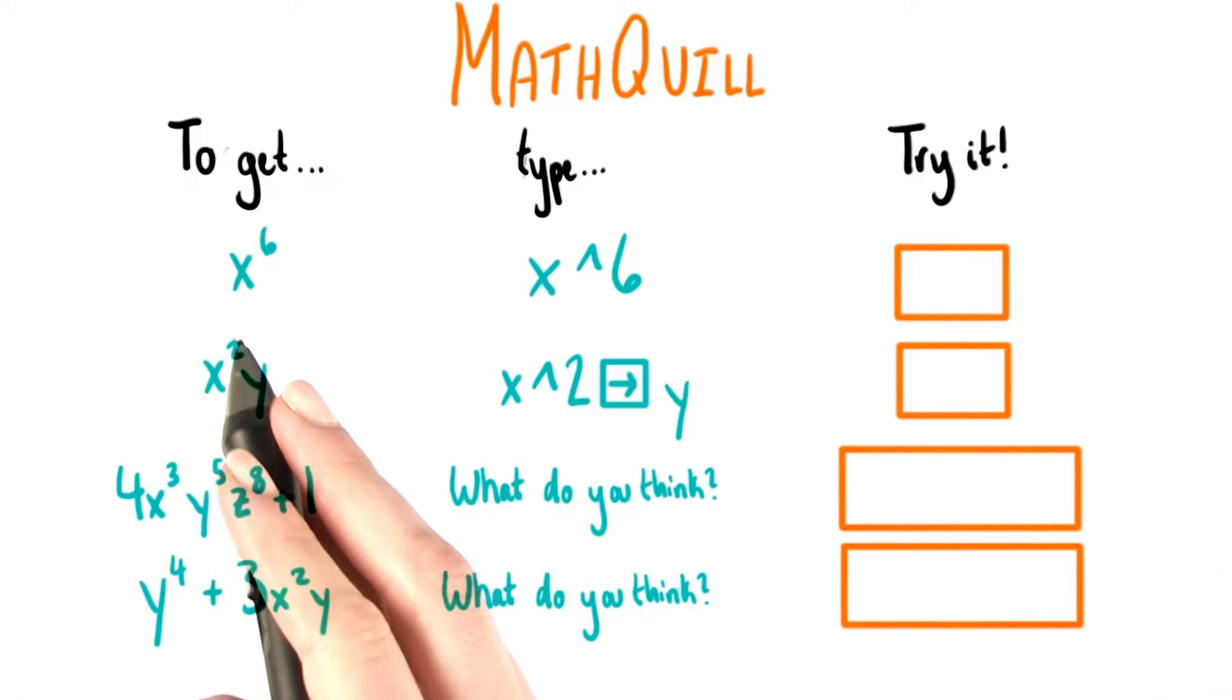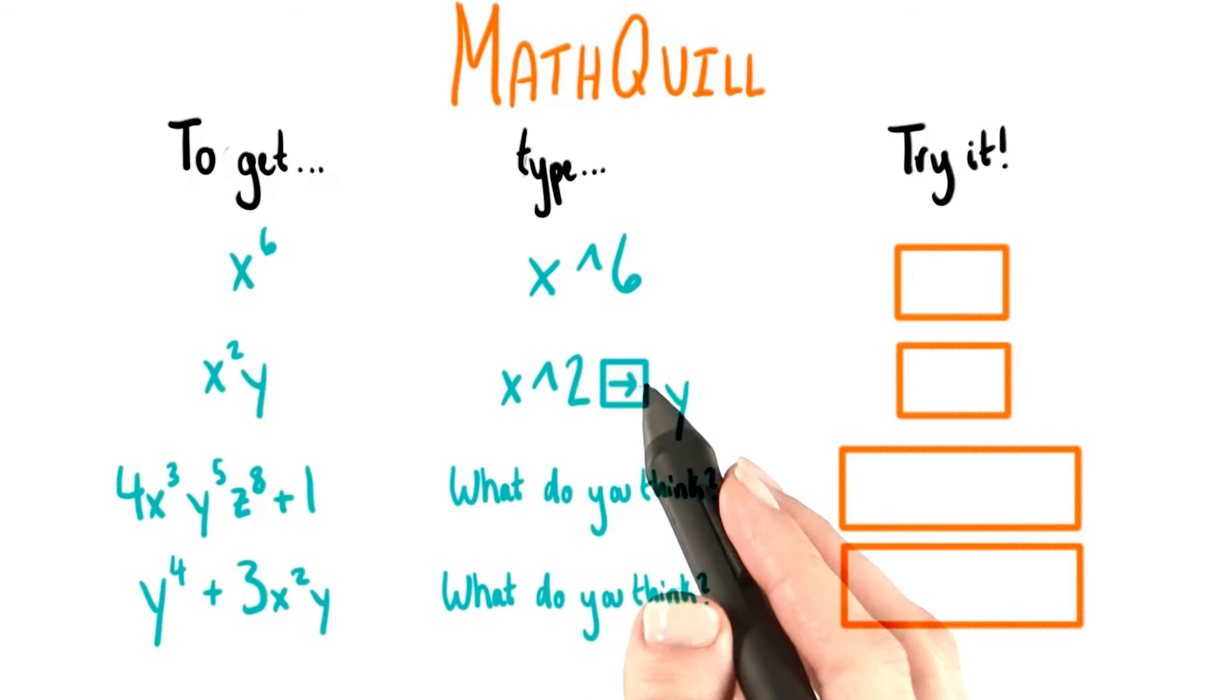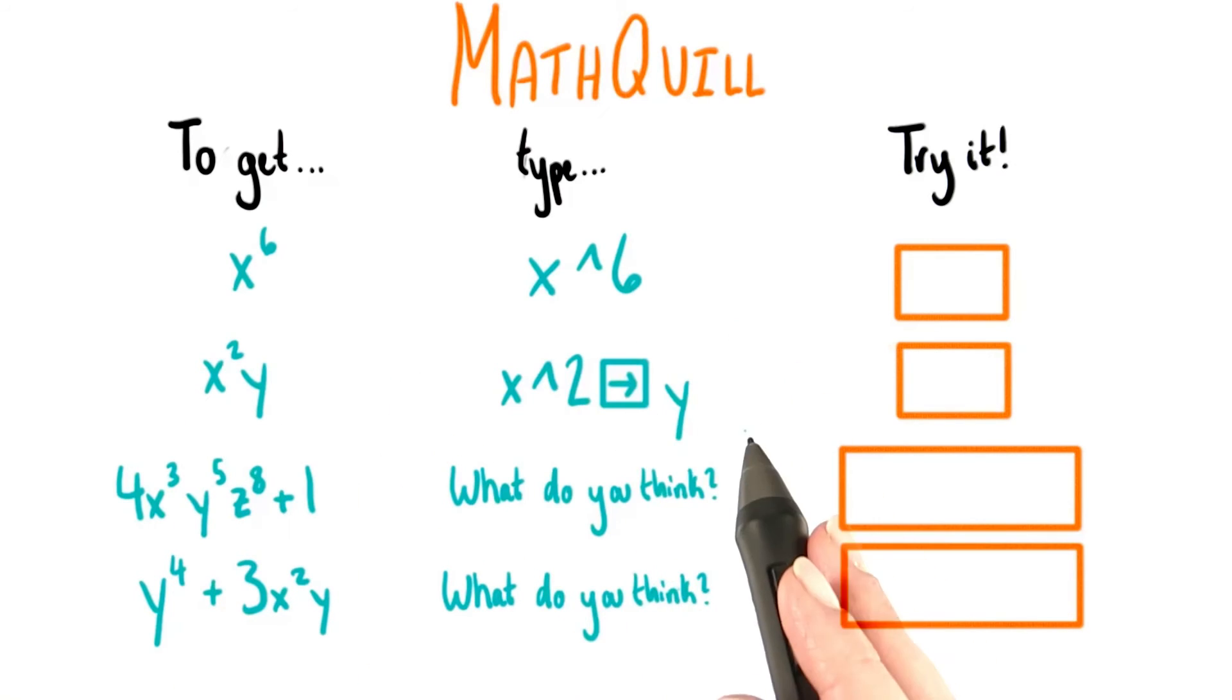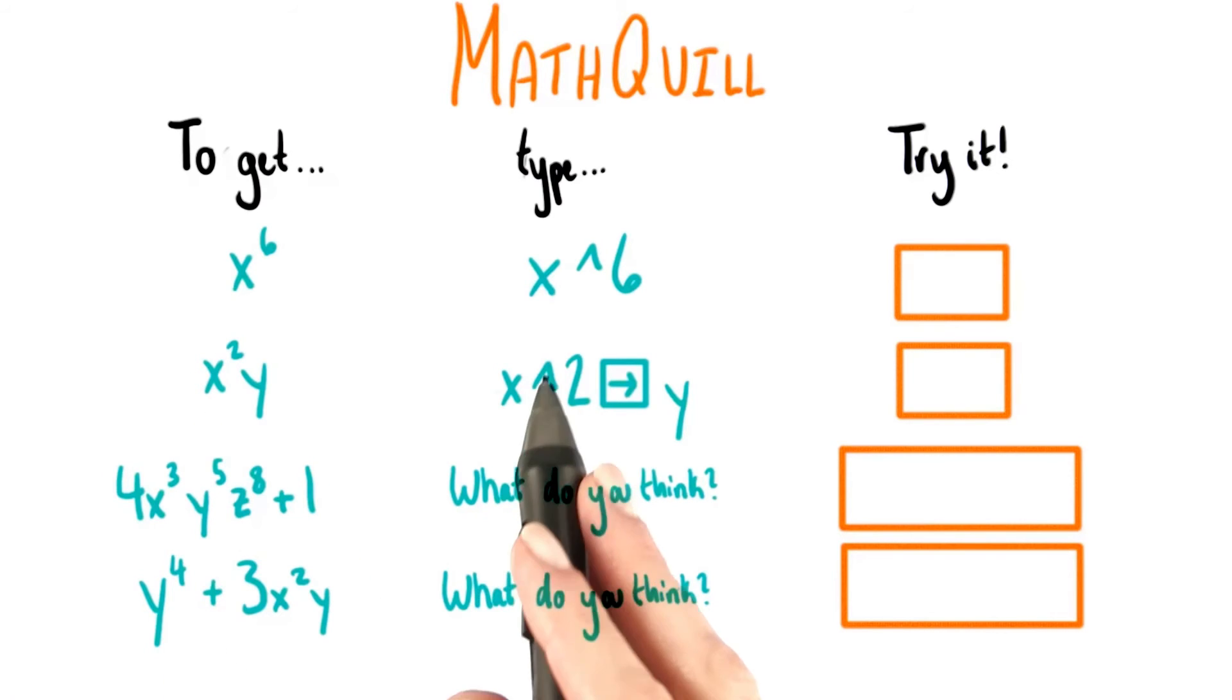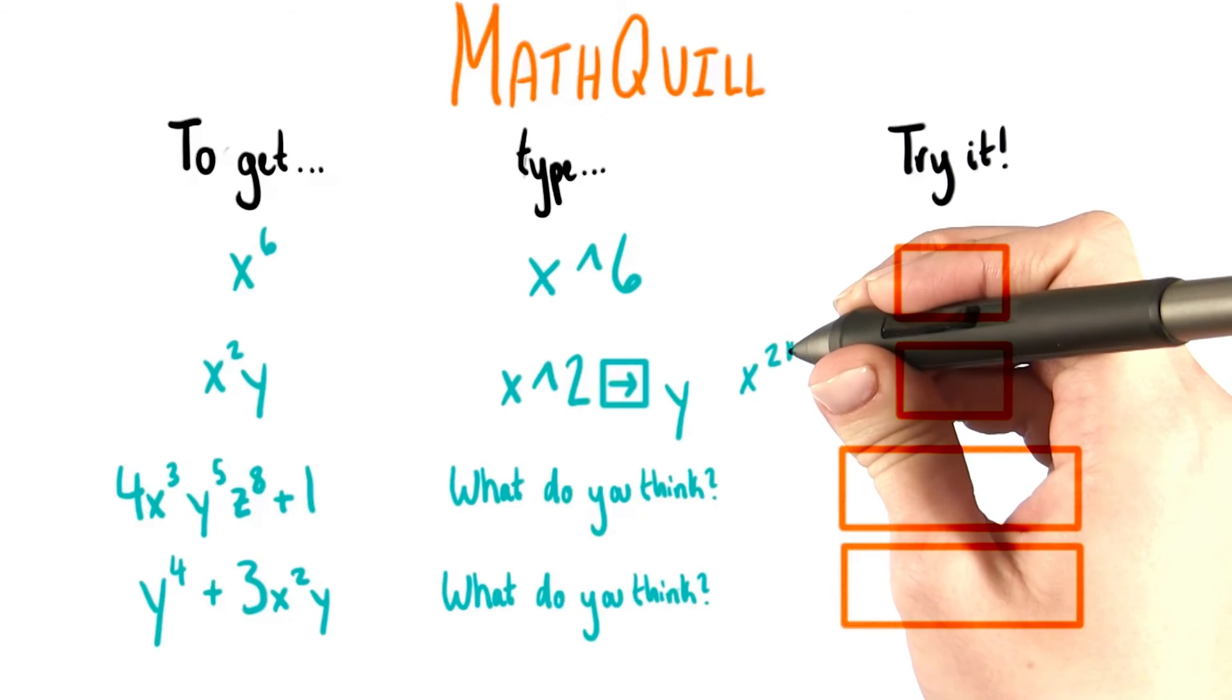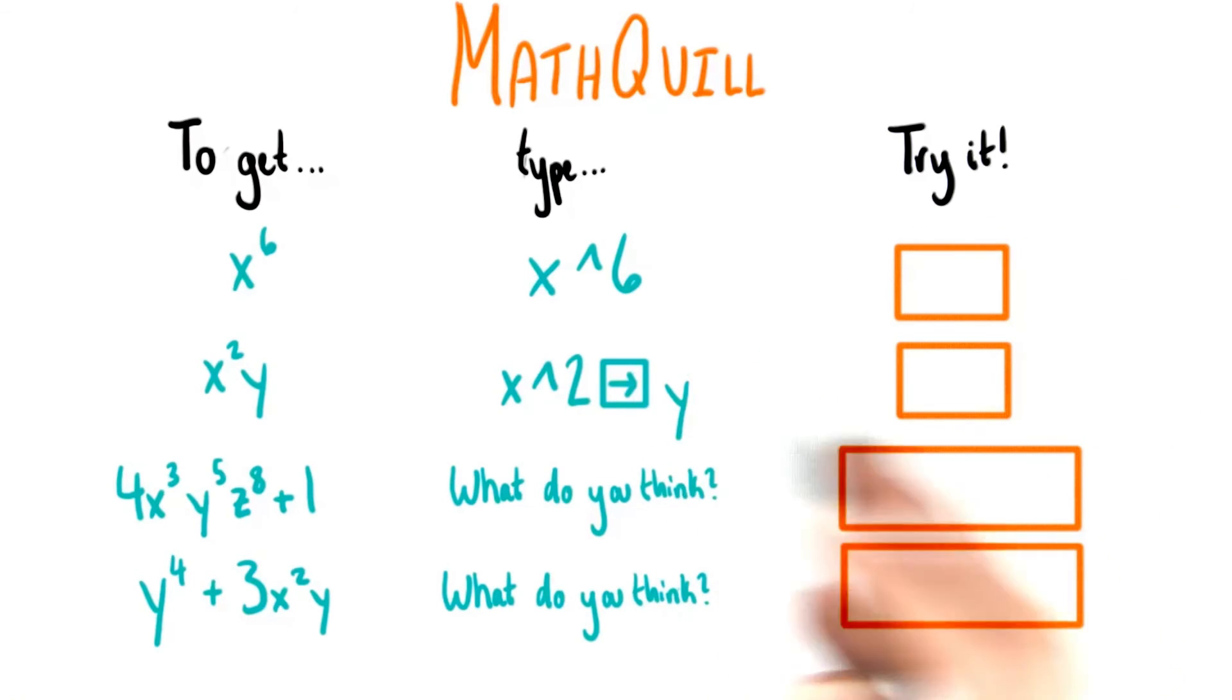Then if you want to get out of the superscript position and back to writing the rest of your expression in the normal spot where you write numbers and variables, you need to type an arrow key to move back down. So if you wanted to type x squared y, you'd need to type x caret 2. But then to move from being up here to being back down here, you just use the arrow key, and then you can continue typing.